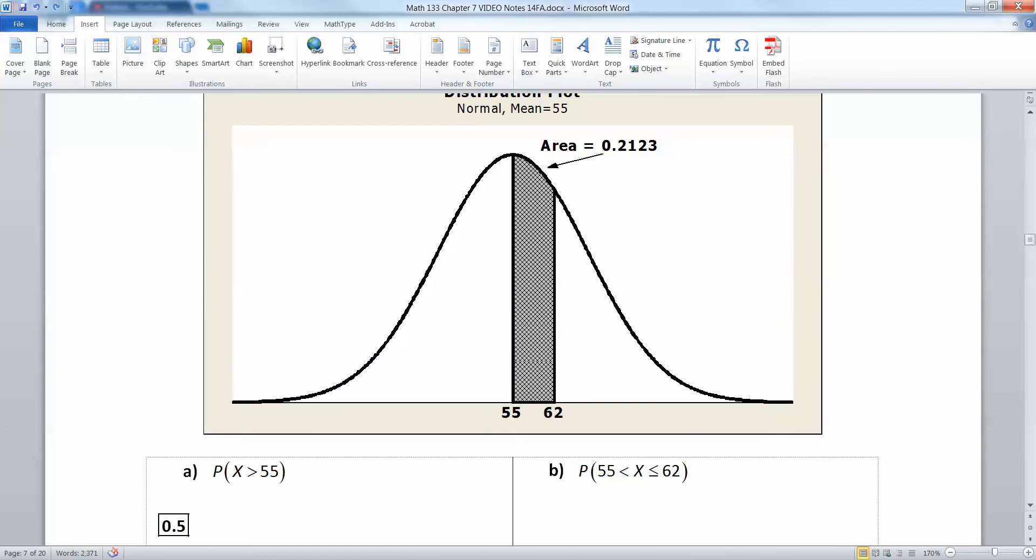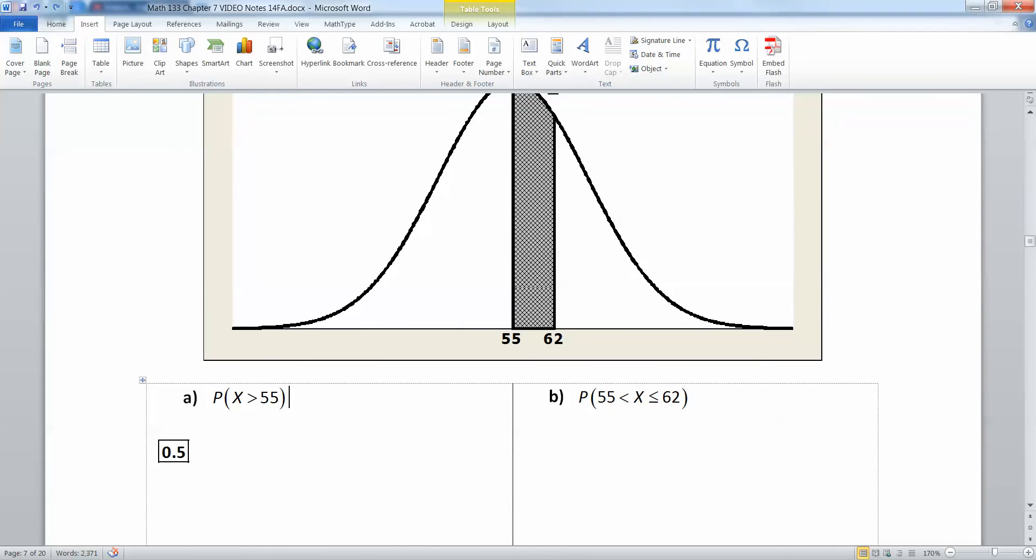Let's look here. I have a curve drawn, you can see this is a normal curve. It says that the mean is 55, then I have this little bit of area here from 55 to 62 and it tells us that area is 0.2123.